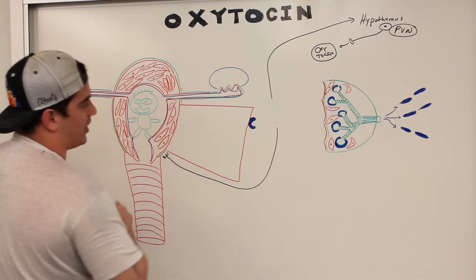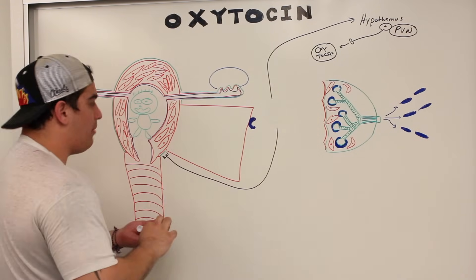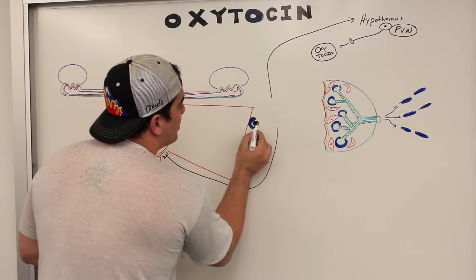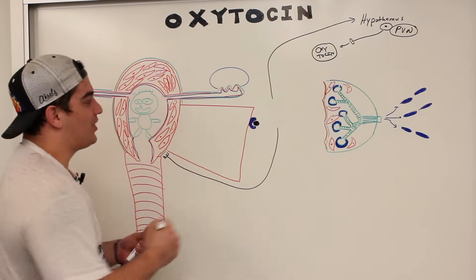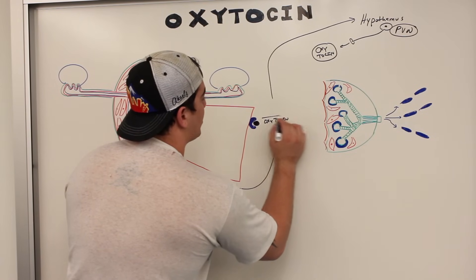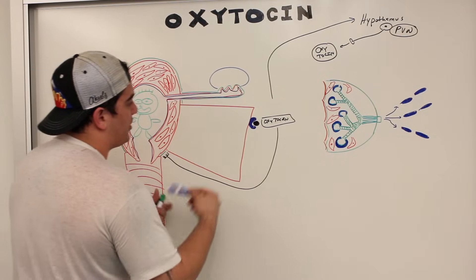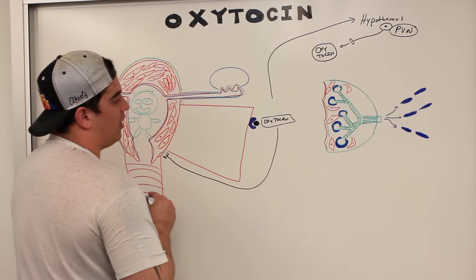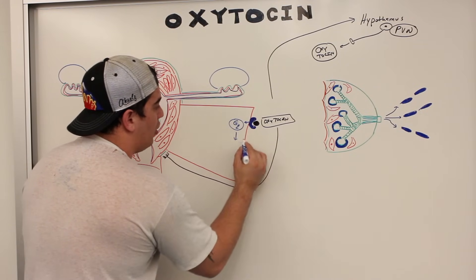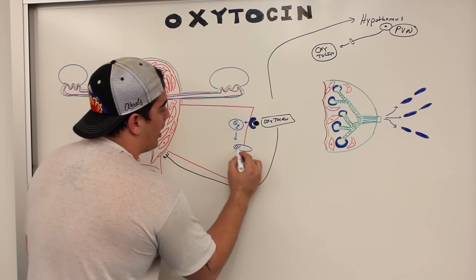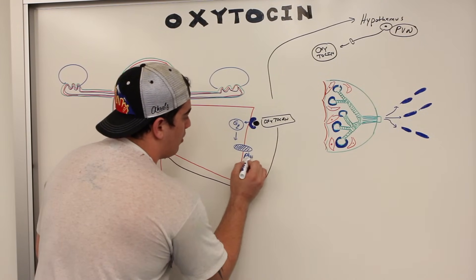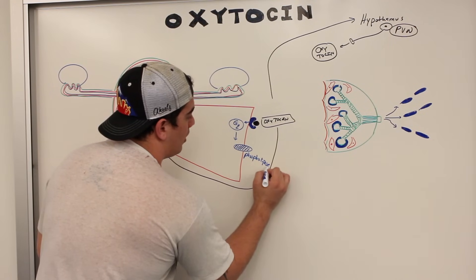I zoomed in on a smooth muscle cell. Oxytocin is going to come and bind onto this specific receptor. When it binds onto this receptor, it works through a specific pathway. Oxytocin binds onto the receptor and activates a GQ protein. GQ comes and activates another protein located on the membrane — this is an effector enzyme called phospholipase C.